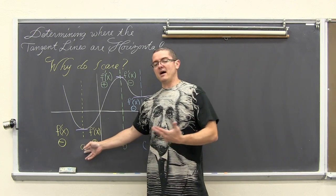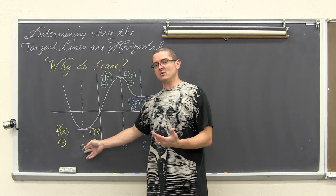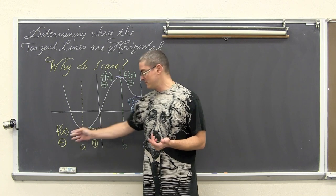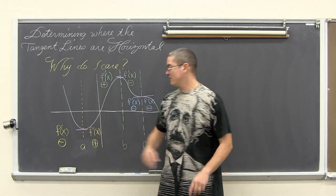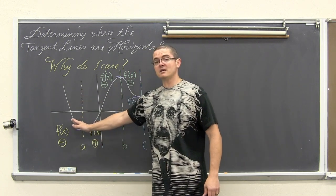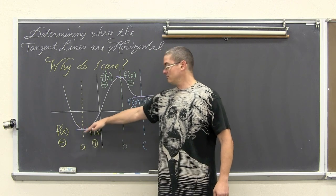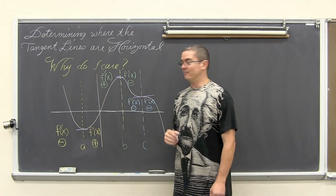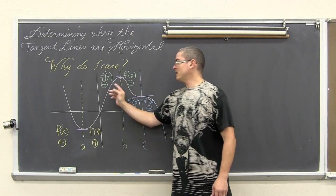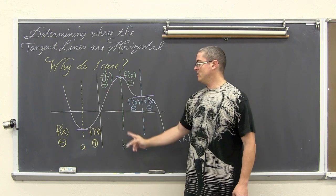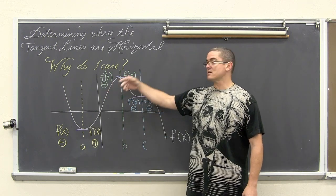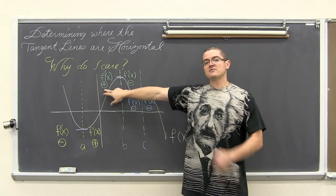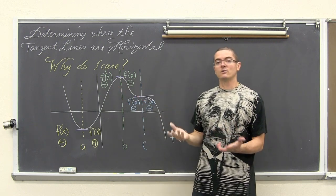If to the left of the value where the slope is equal to zero your first derivative is negative, and to the right your first derivative is positive, well then your graph was falling with a negative slope, bottomed out, and then started to rise with a positive slope — that is a relative minimum. Or, if the derivative is positive to the left and negative to the right of that particular x value, you have found a relative maximum.